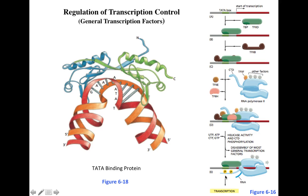This conformational change helps RNA polymerase initiate transcription. Following phosphorylation, all general transcription factors except TF2D and TF2A dissociate from the complex — including TF2E, TF2H, and TF2F. TF2D and TF2A remain so they can recruit new RNA polymerase molecules. This conformational change and dissociation of the other general transcription factors allows RNA polymerase to initiate transcription.